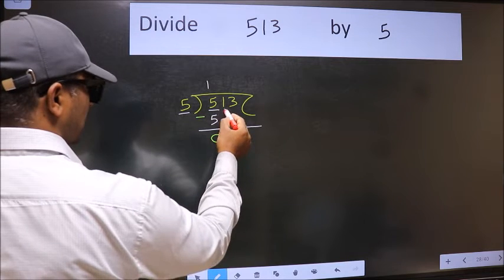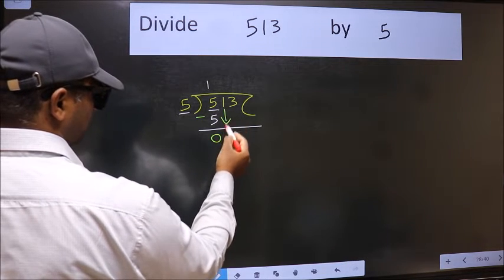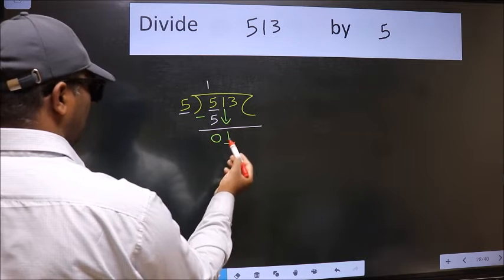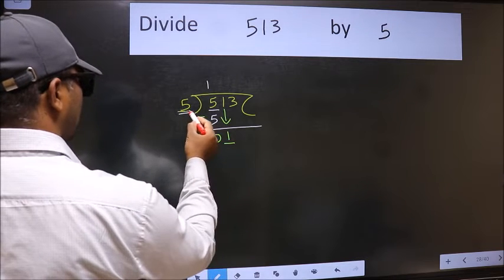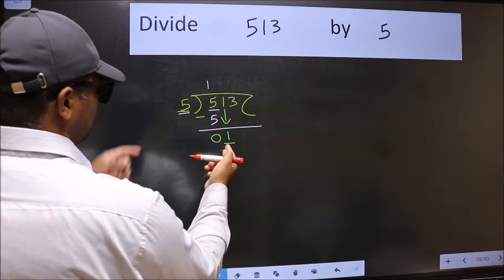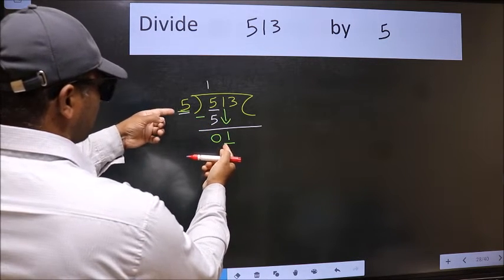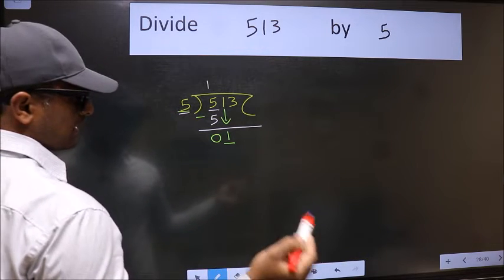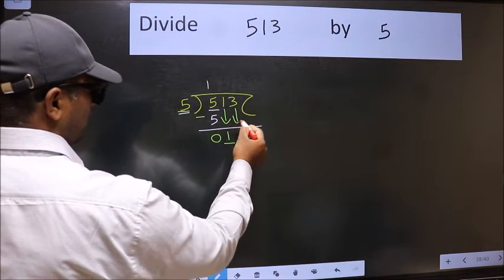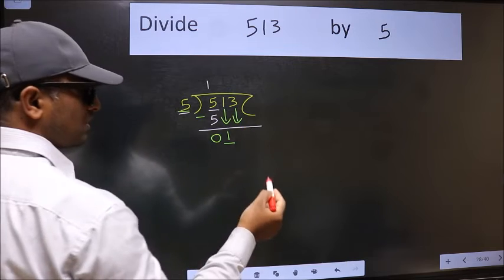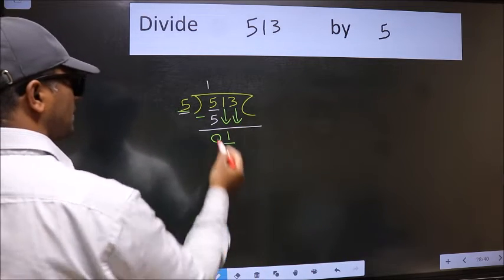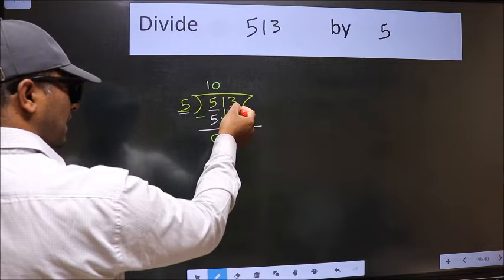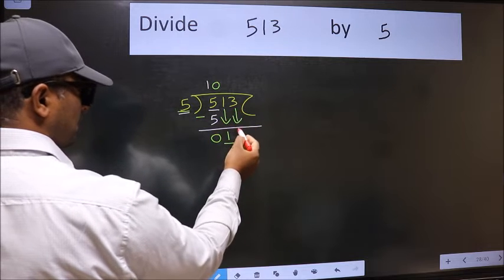After this, bring down the beside number. So 1 comes down. Now here we have 1 and here 5. 1 is smaller than 5, so we should bring down the second number. The rule to bring down the second number is we should put 0 here. Then only we can bring this number down.